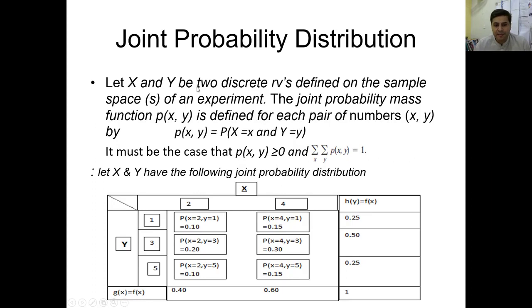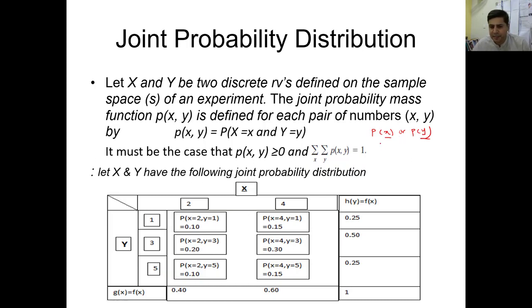Let x and y be two discrete random variables defined on the sample space S of an experiment. The joint probability mass function — which we previously denoted as probability of x or probability of y when we had only one random variable — will now be denoted as probability of x and y, because we have two types of variables. This is defined for each pair of numbers (x, y), and we write it as p(x, y), where x relates to the events in x and y relates to the events in y.